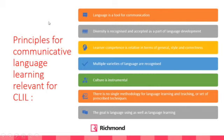There are some principles from communicative language learning that are relevant for CLIL. First: language is a tool for communication — this means grammar is not the most important thing in CLIL. When using a CLIL approach, focus more on fluency than accuracy. The goal is that students learn something through English. Everyone has probably done this — for example, a Halloween activity where you teach words like ghost, witch, pumpkin, and trick-or-treat.